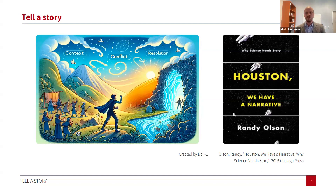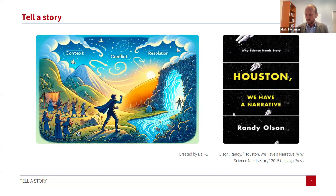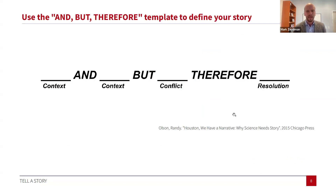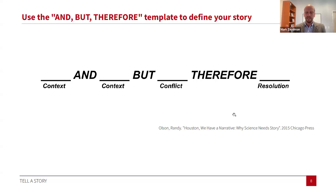A story should have three elements: context, conflict, and then resolution of that conflict. If we can achieve those three elements within our presentation, we will better engage our audiences because humans are deeply engaged with stories. Dr. Olson provides a template called And-But-Therefore. You fill in the blanks: blank and blank, but blank, therefore blank. The 'and' statements are the context — setting the scene. Very quickly, you want to get to that 'but' statement, which is the conflict — the problem that needs to be overcome — leading logically to the 'therefore,' which is what you did to resolve that problem.